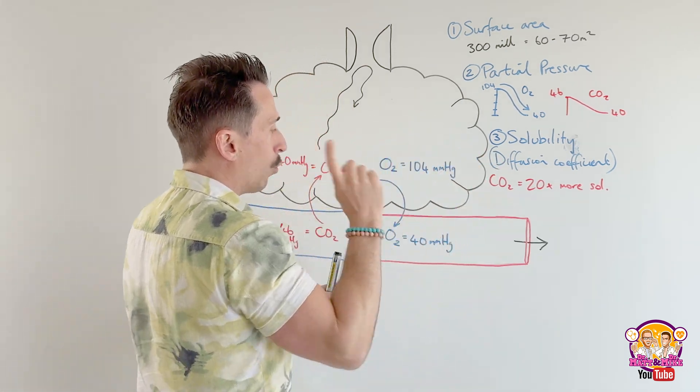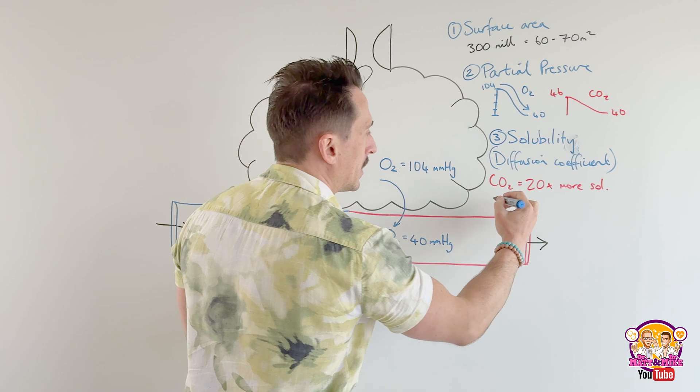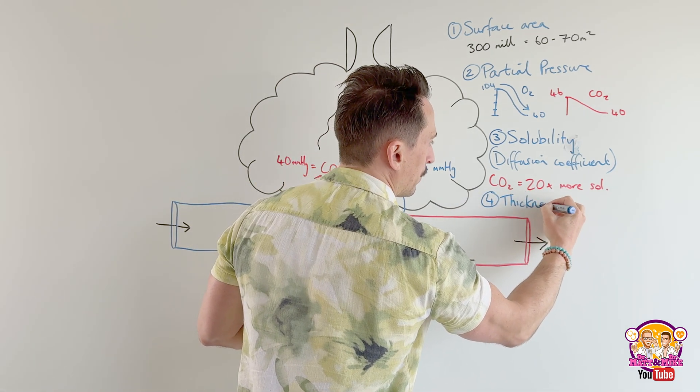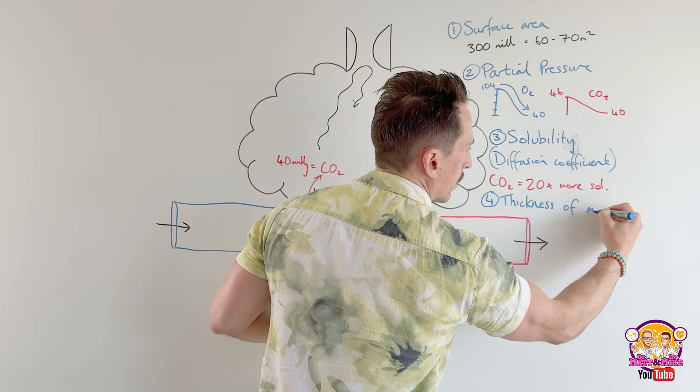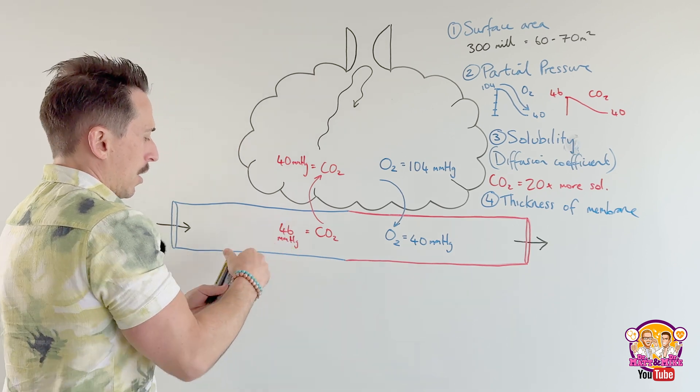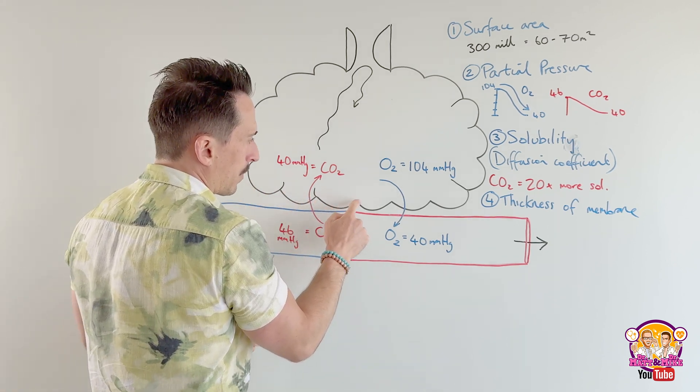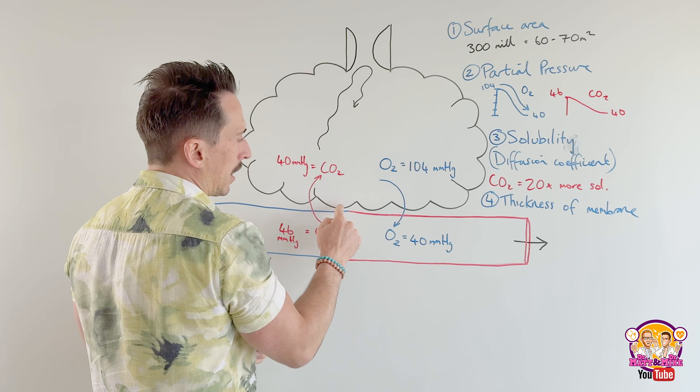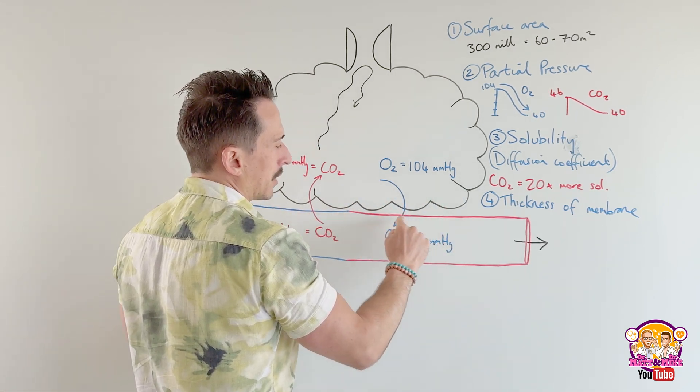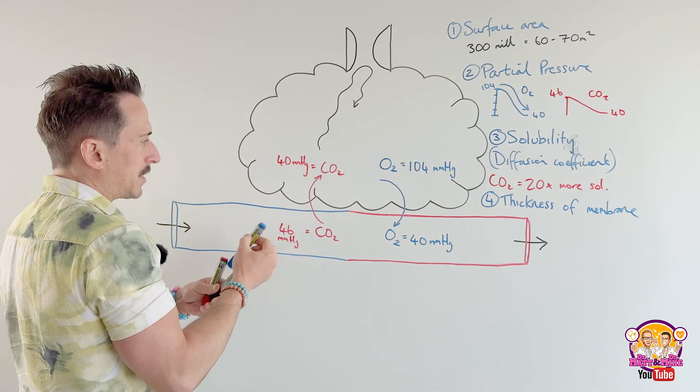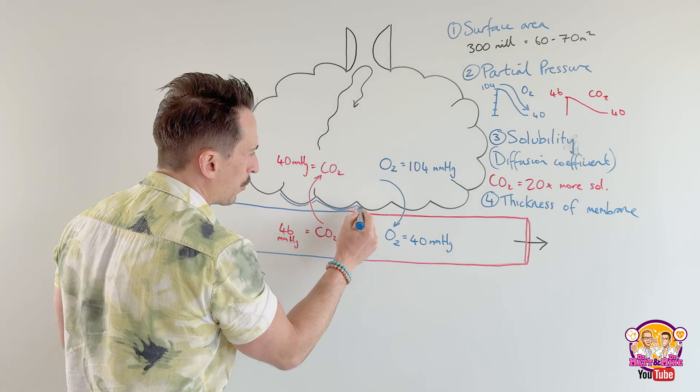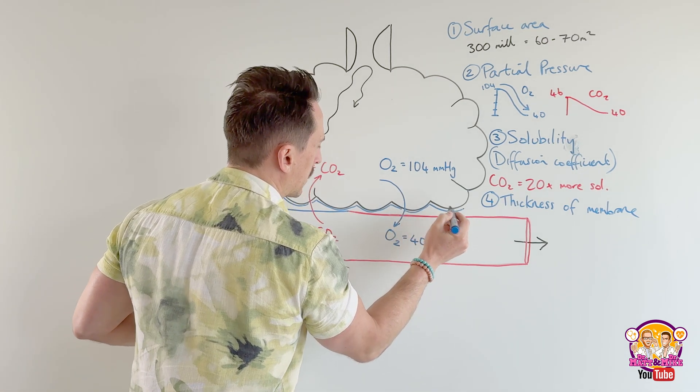Now the solubility can be affected by a couple of things, and one really important thing is the final point here, which is the thickness of the membrane that it needs to diffuse across. What we've got here is what we call the respiratory membrane. You've got the epithelia of the alveoli, you've got the endothelia of the blood vessel, and you've got the connective tissue that sits between both. So it's really really thin, and it's thin enough for the gases to diffuse across no problem.